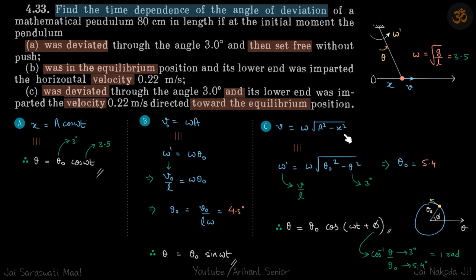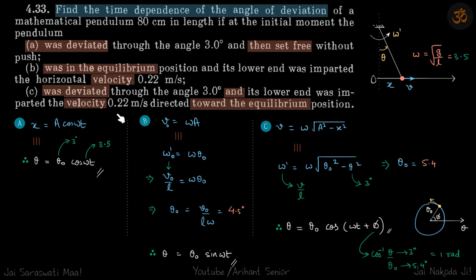When certain velocity is given and we know the position, we use the formula v = ω√(A² - x²). The analogous angular form is: ω' = ω√(θ₀² - θ²). The maximum angular velocity is ω'_max = ω·θ₀, and the general angular velocity at angle θ is ω' = ω√(θ₀² - θ²). Here, since velocity is given, we write ω' = v/l, and θ is given as 3 degrees. Solving this gives us the value of θ₀.